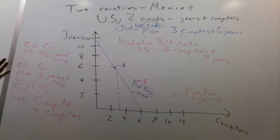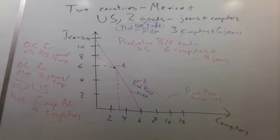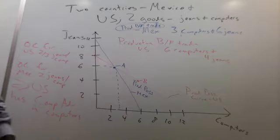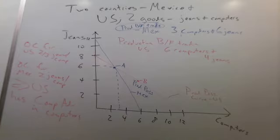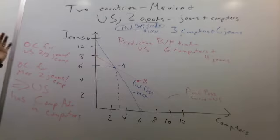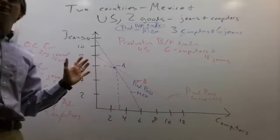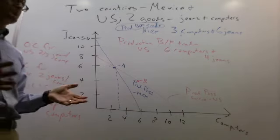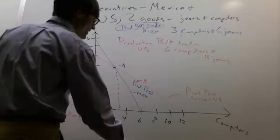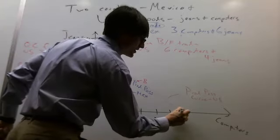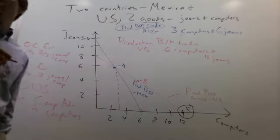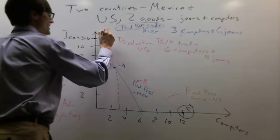I'm not going to ask you to do all these calculations — I just want you to see these principles. If we open up to trade, the U.S. should produce nothing but computers, and Mexico should produce nothing but jeans. If they produce nothing but jeans and we produce nothing but computers, and we trade one pair of jeans for one computer, both countries can consume anywhere along a new consumption possibilities curve — beyond what they could produce alone.